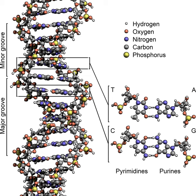DNA exists in several possible conformations. The conformations so far identified are A-DNA, B-DNA, C-DNA, D-DNA, E-DNA, H-DNA, L-DNA, and Z-DNA. However, only A-DNA, B-DNA, and Z-DNA are believed to be found in nature. Which conformation DNA adopts depends on the sequence of the DNA, the amount and direction of supercoiling, chemical modifications of the bases, and also solution conditions such as the concentration of metal ions and polyamines.